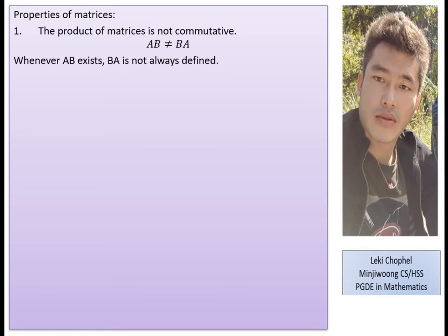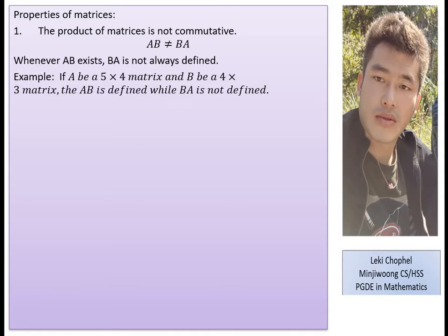For example, let A be a 5×4 matrix and B be a 4×3 matrix. AB is defined because the column of A is 4 and the row of B is 4 — they are equal. So we can multiply AB.